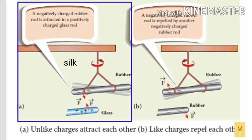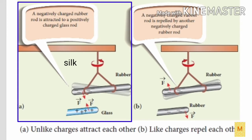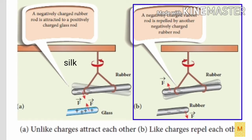Look at the first picture. A negatively charged rubber rod is taken and it is suspended with the help of a silk thread with the help of a rigid support. When a positively charged glass rod is brought near to the negatively charged rubber rod, what will happen? See the arrow mark of force. It indicates that both the rubber rod and glass rod are trying to attract each other.